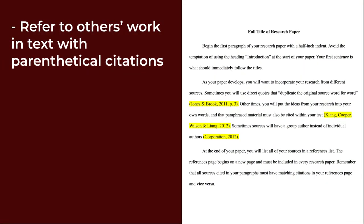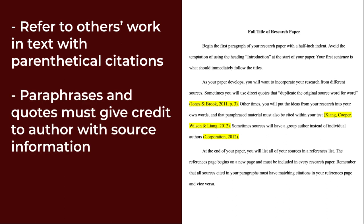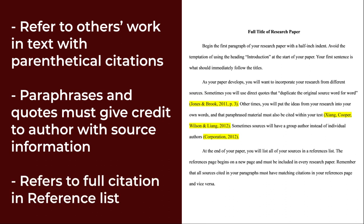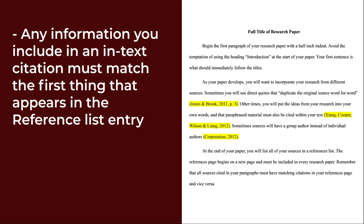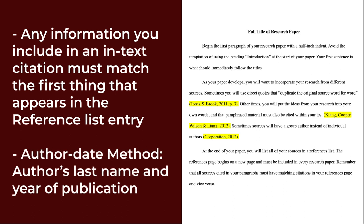In APA style, referring to the works of others in your text is done using parenthetical citations. Anytime that you paraphrase or quote someone else's words or ideas within the body of your paper, you must give credit to the original author with an in-text citation. This method involves providing relevant source information in parentheses. Whenever a sentence uses a quotation or paraphrase, the in-text citation refers the reader to the full citation in the reference list at the end of a paper. The rule of thumb is that any information you include in the in-text citation must match the first thing that appears in the corresponding reference list entry — usually this will be the author's name. APA format follows something called the author-date method of an in-text citation, which requires the inclusion of the author's last name and the year of publication for the source, separated by a comma.